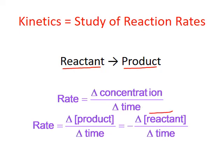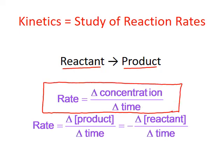Rates for chemical reactions are generally measured as the changes in concentration over time. We can more specifically define those as the change in product concentration over time, or the change in reactant concentration over time. If we measure the product concentration, that's going to increase over time since it's being produced, giving us a positive reaction rate. The general convention is that we always have positive values for our rates.